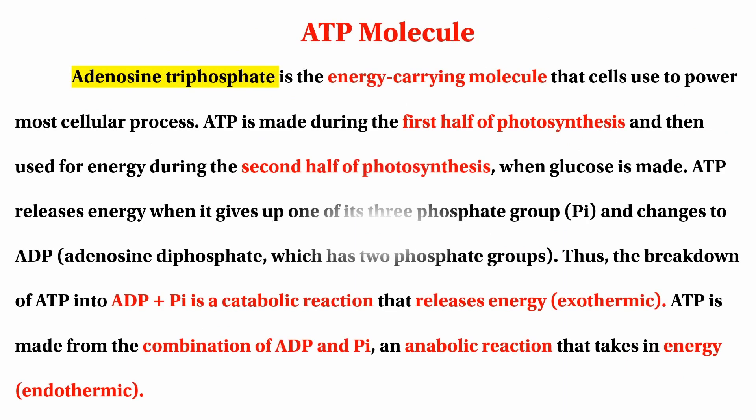ATP molecule needs to be charged with energy. Adenosine triphosphate is found in the mitochondria — the powerhouse of the cell. It is the energy-carrying molecule that powers most cellular processes.